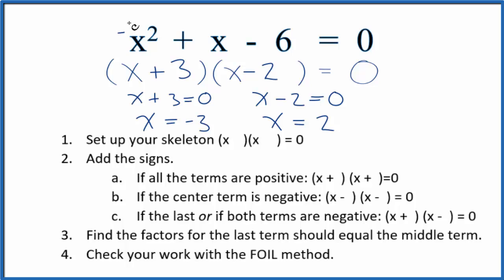If I put -3 in for x and solve the equation, it's going to equal 0. If I put 2 in for x, it'll also equal 0 when I work the equation out. So these are the solutions for x² + x - 6.